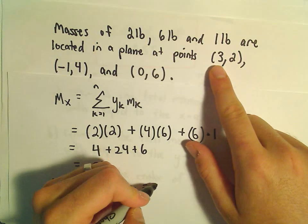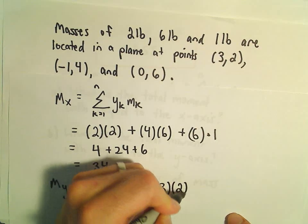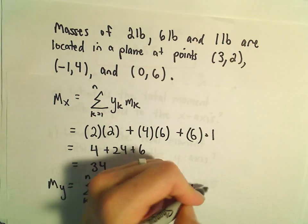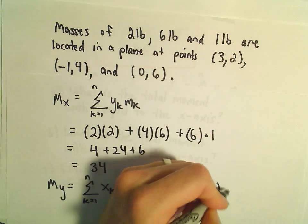Now we do the same thing, except we use the x-coordinates instead of the y-coordinates. So the x-coordinate of the first point is 3, it has a weight of 2, plus the next x-coordinate, which is negative 1. We'll multiply that by its weight, which is 6.